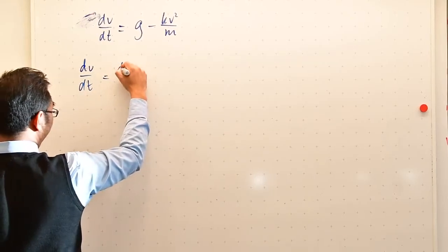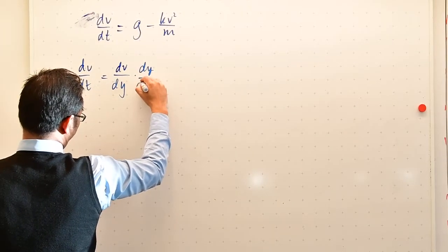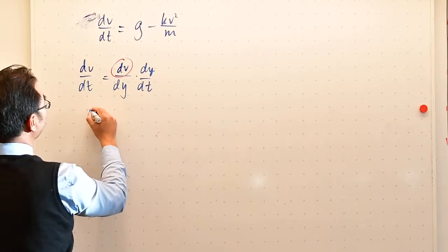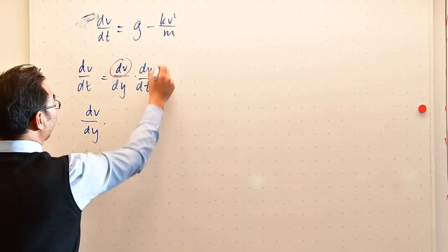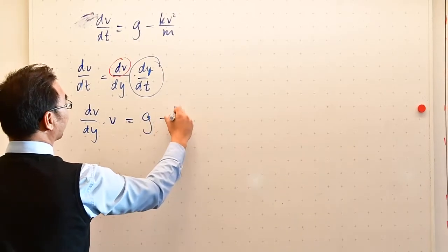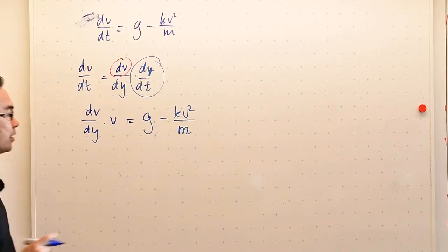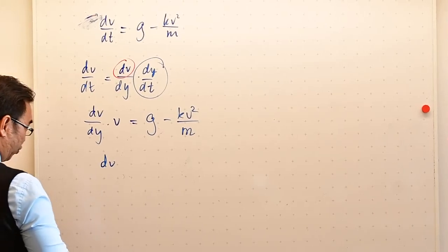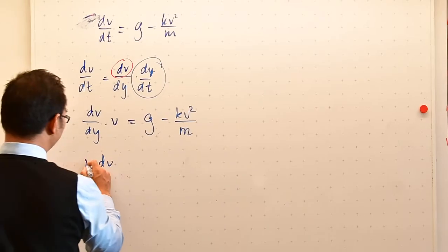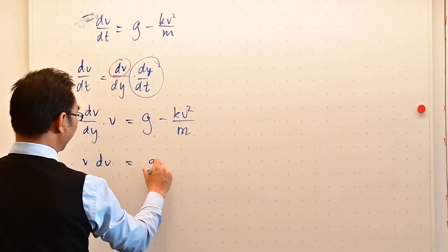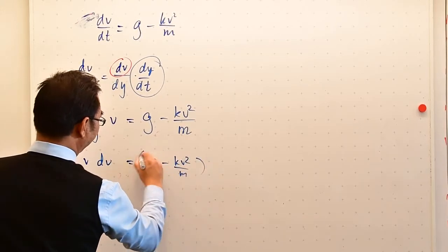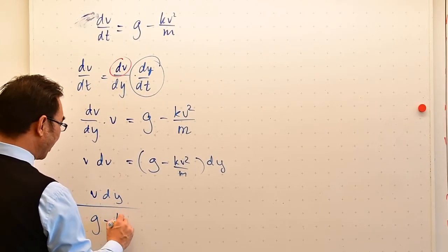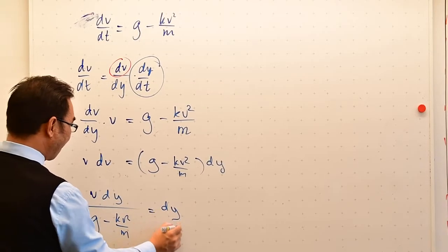If you actually write dv dt with the help of chain rule, you're going to be able to get dv dy dy dt. So you see that you have dv left. And it means that you can write down the equation here differently as dv dy. And dy dt is basically the velocity. So now you want to have vdv in the left hand side. You just have to multiply dy on both sides. And then you can have vdv divided by g minus k v squared divided by m equals dy.